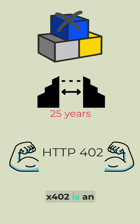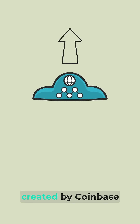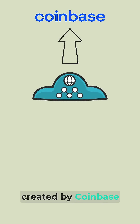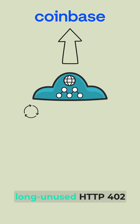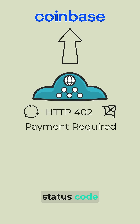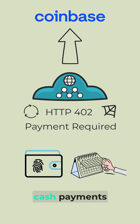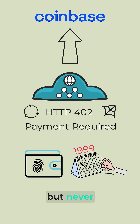X402 is an internet-native payment protocol created by Coinbase. It repurposes the long-unused HTTP 402 payment-required status code, which was originally reserved for digital cash payments in 1999 but never implemented.